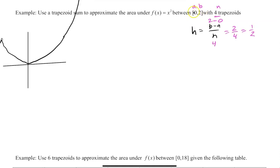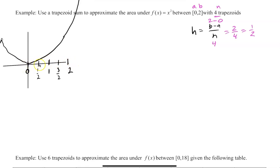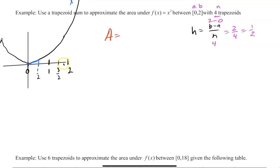Each trapezoid has width 1/2. Starting at 0, we go 0, 1/2, 1, 3/2, 2. We prefer improper fractions in calculus. So our trapezoid intervals are [0, 1/2], [1/2, 1], [1, 3/2], [3/2, 2]. The trapezoid formula is (1/2) × height × (base 1 + base 2), where the height is 1/2 in every case.